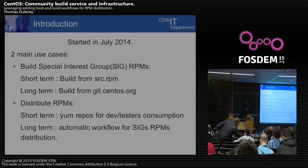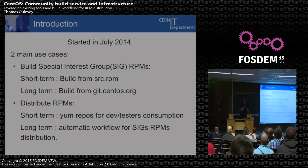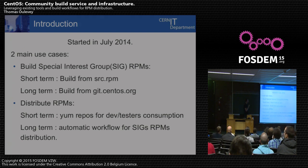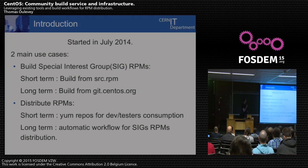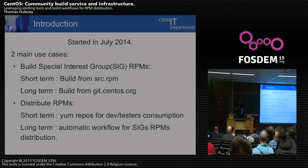The main use case for the build service was, first, to build RPMs. We wanted all the special interest groups to be able to contribute to the community, so we need a central service to build all the RPMs. We started building from source RPMs, but the ultimate goal is to build everything from a Git repository. The second step was to distribute RPMs — when you build them, you want to install and test them. Short term, we did that for all developers and testers. Long term, we want an automatic workflow that signs the RPMs and distributes them somewhere accessible to users.